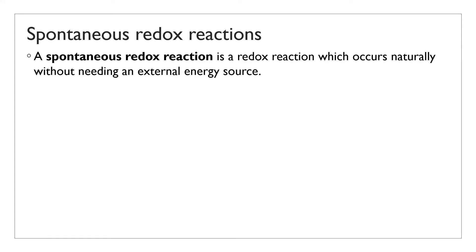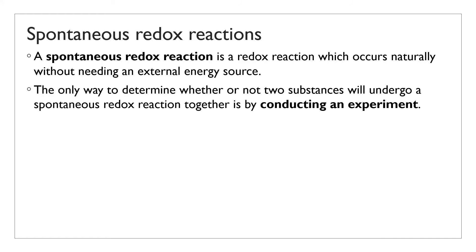So in the previous example, the reaction between zinc and copper ions, or zinc and silver ions, would be spontaneous redox reactions, whereas the combination between zinc and magnesium ions is not spontaneous. Another thing to highlight is that the only way to know for sure whether two substances will react spontaneously with each other is by conducting an experiment — by mixing them together. It's impossible to just look at zinc and know what it will react with spontaneously.